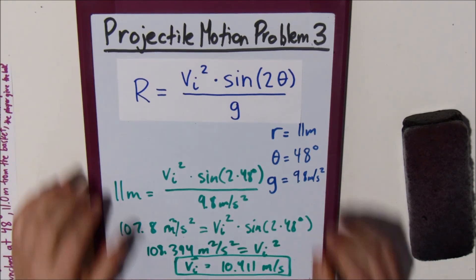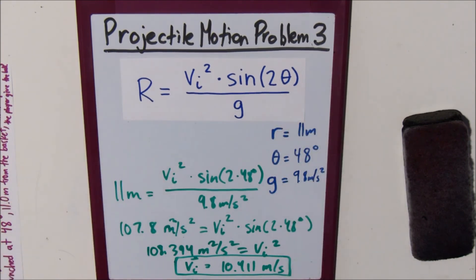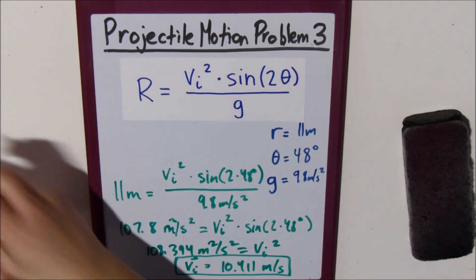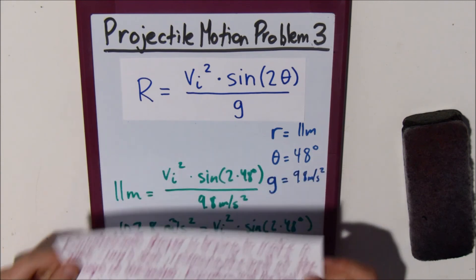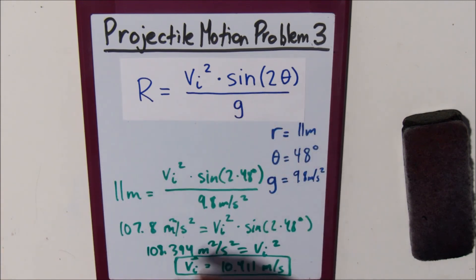So, you can see that this equation is really helpful in these types of problems, where you have three of the four variables in the range equation, and you're trying to solve for the last fourth one.